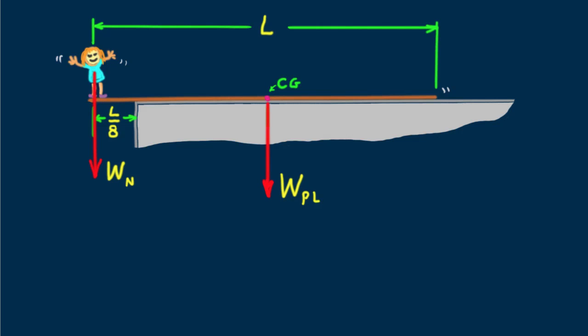Again, the edge of the building acts as the fulcrum about which tipping can occur. When the plank is at its maximum safe overhang distance, the torque due to Nellie's weight just balances the torque due to the plank's weight.